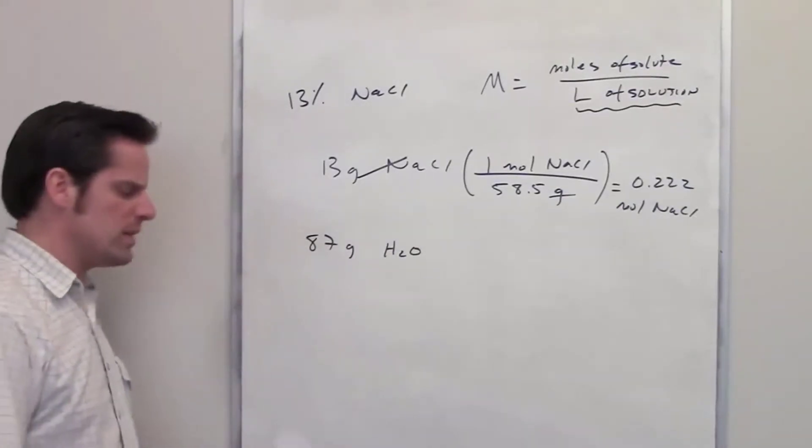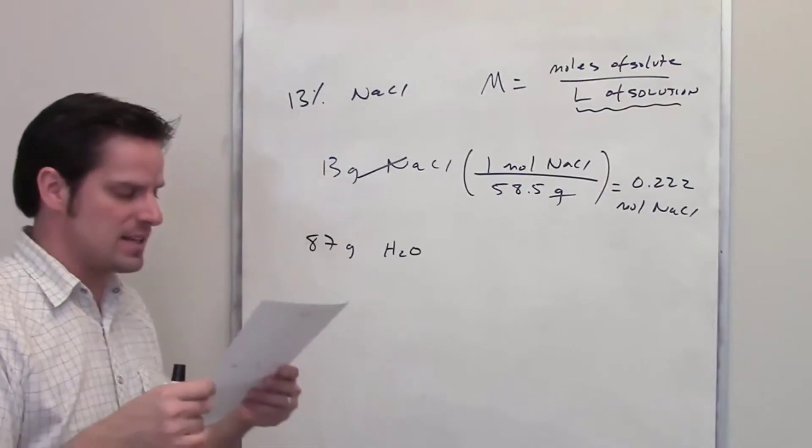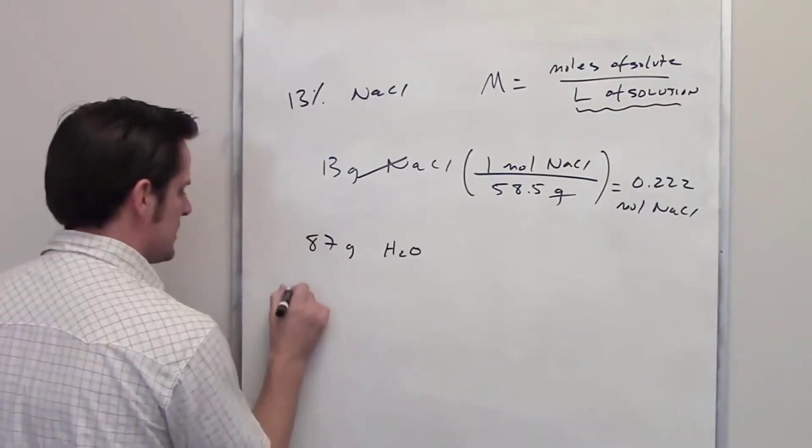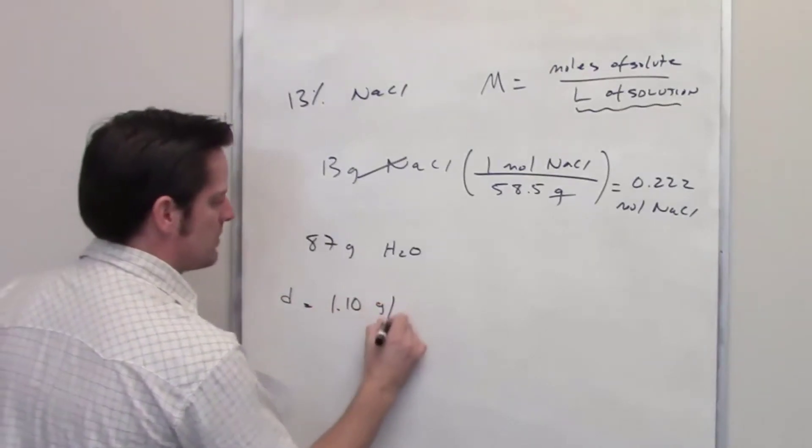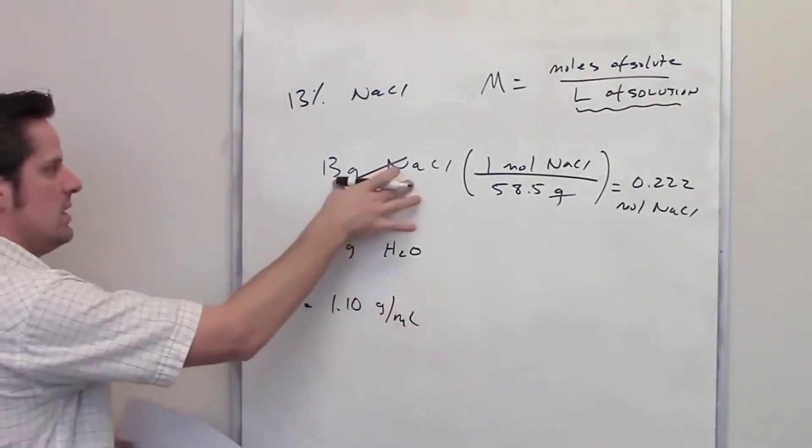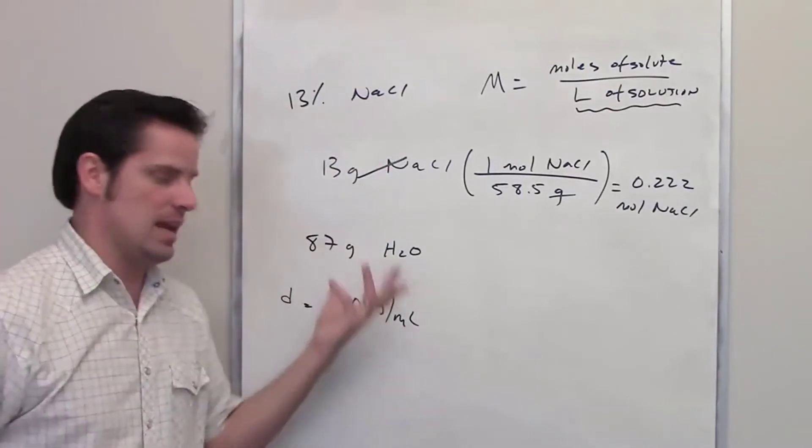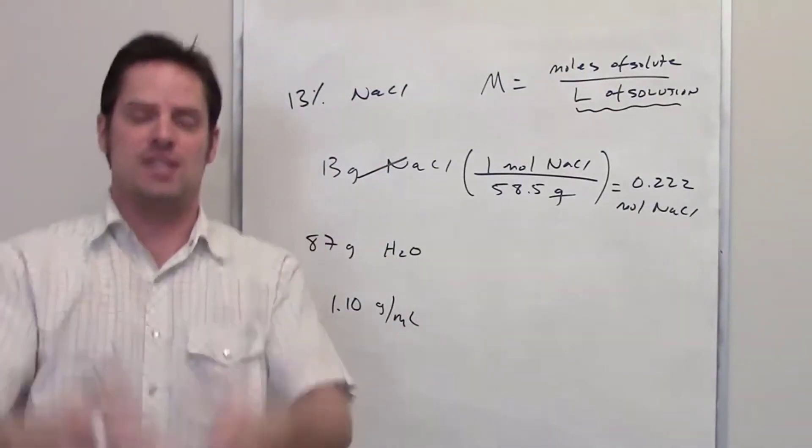So how in the world do we do that? Well, it gives us in this problem the density of this particular solution. It says that the density, which I'll abbreviate as D, is equal to 1.1 grams per milliliter. So when you have 13% sodium chloride by weight in water, that happens to be how dense it is.